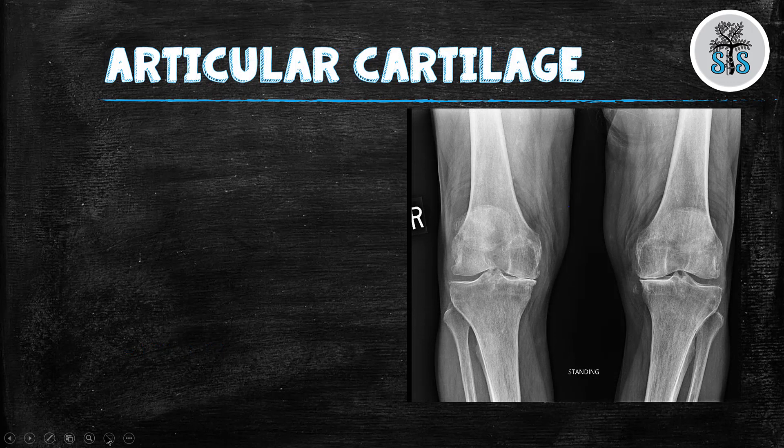Articular cartilage: there are two types. Fibrocartilage is primarily composed of type 1 collagen, and is found in your meniscus, your TFCC, and your vertebral discs. Hyaline cartilage is composed of type 2 collagen and is found in the articular cartilage of synovial joints — and this is what we're going to focus on.